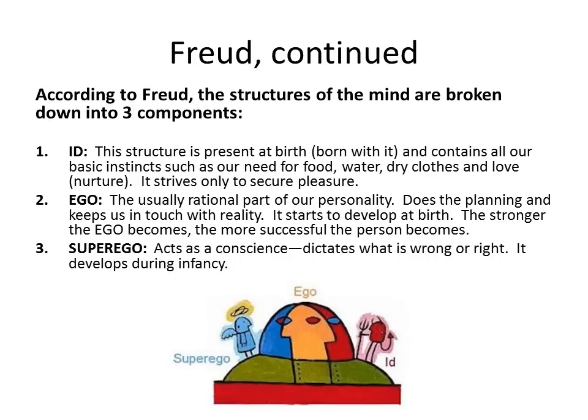The ego is the usually rational part of our personality. It begins to develop after we're born and is all about planning and keeping us in touch with reality. The stronger the ego becomes, the more successful the person becomes, according to Freud. Last, we have the superego — our conscience. It dictates what is right and wrong and develops during infancy. Think of the superego as the angel on your shoulder, the id as the devil on your shoulder, and the ego as the planning part that doesn't judge right or wrong.